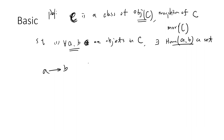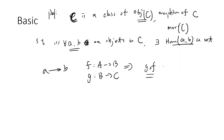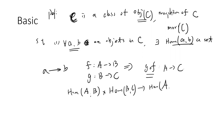The first condition: given a morphism from A to B and a morphism from B to C, then you have a morphism g∘f — which is not just a function, but there is a unique morphism from A to C. So if you have a morphism from A to B and a morphism from B to C, you will have a morphism from A to C.